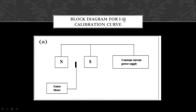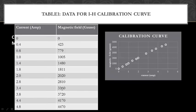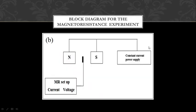This is the block diagram for the I-H calibration curve, showing the north and south poles of the magnet, the constant current power supply, and the Gauss meter. You first calibrate the Gauss meter by increasing the current and measuring the magnetic field. The current versus magnetic field graph is the calibration curve. This is also the block diagram for the magnetoresistance experiment, with the constant current power supply and the magnetoresistance setup.